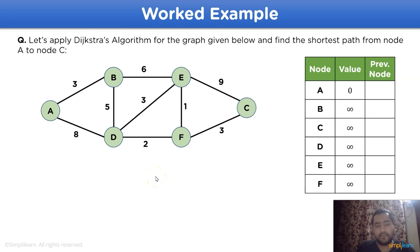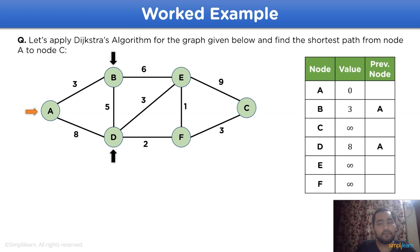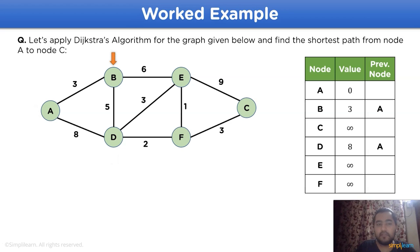Now let's start with the actual solution. The first step is to mark the current node, which is node a. The nodes directly connected to node a are node b and node d. Using the distances — 3 for node a to node b and 8 for node a to node d — we will update our table, noting that the previous node is marked as a for both nodes b and d.